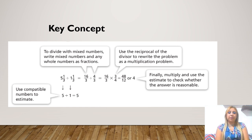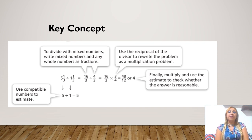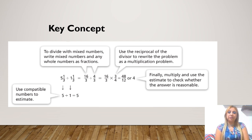After converting the mixed number to an improper fraction, you use the KFC method again. Keep the first fraction the same, flip the second fraction — put the denominator as the numerator and the numerator as the denominator. Change division to multiplication, then multiply the top numbers and the bottom numbers.